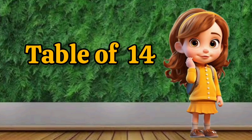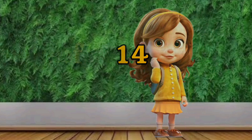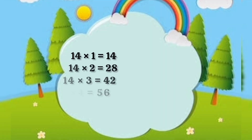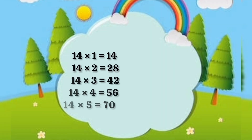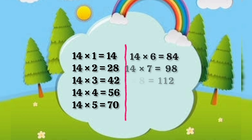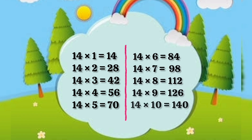Table of 14. 14 1s are 14, 14 2s are 28, 14 3s are 42, 14 4s are 56, 14 5s are 70, 14 6s are 84, 14 7s are 98.